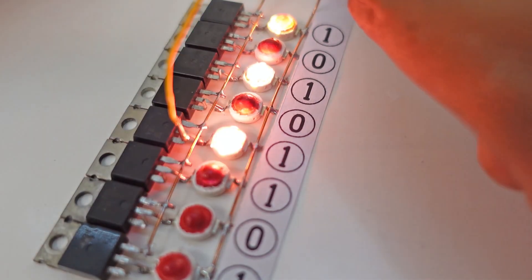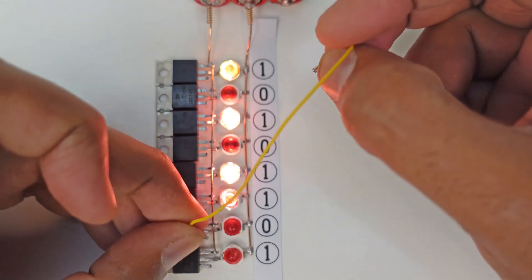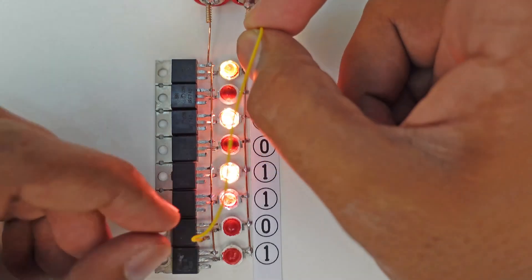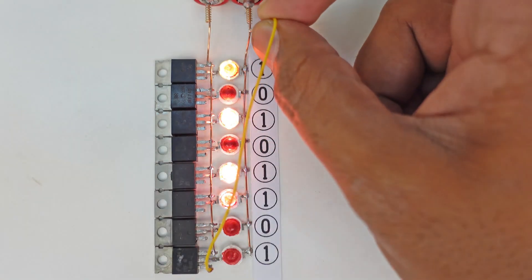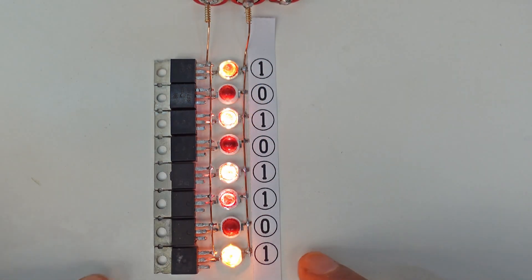The fifth bit is also one. The sixth bit is also one. The seventh bit is zero. And the eighth bit is also one. We have successfully saved our one byte data in this flash memory.